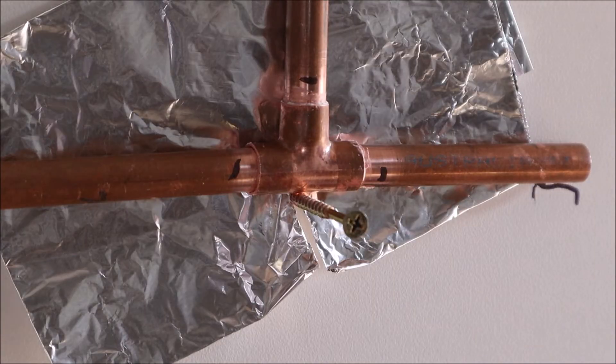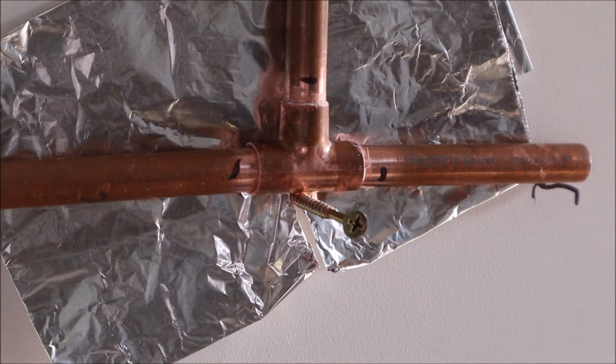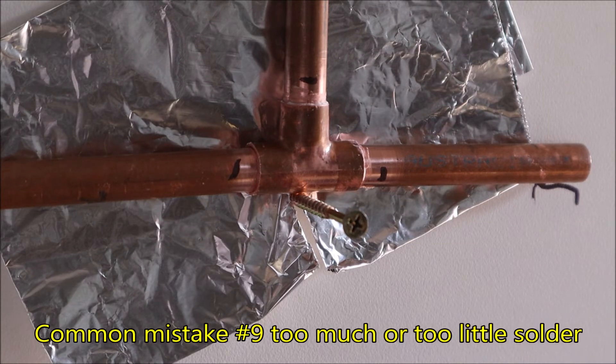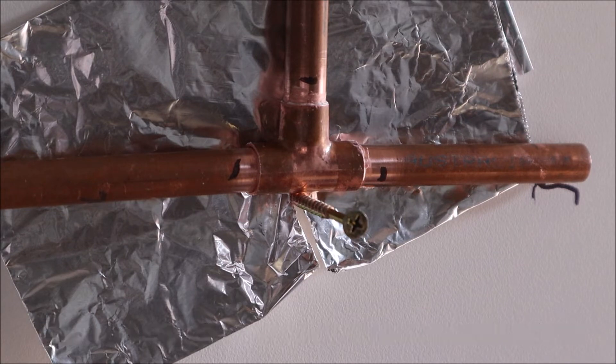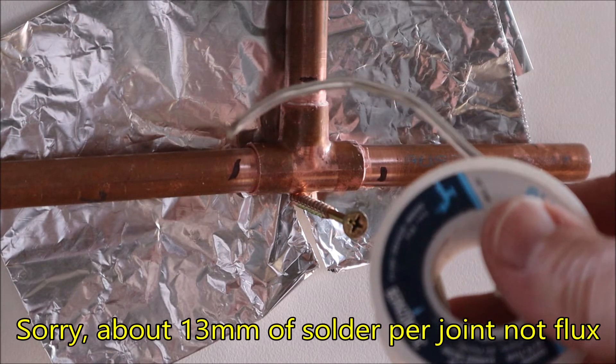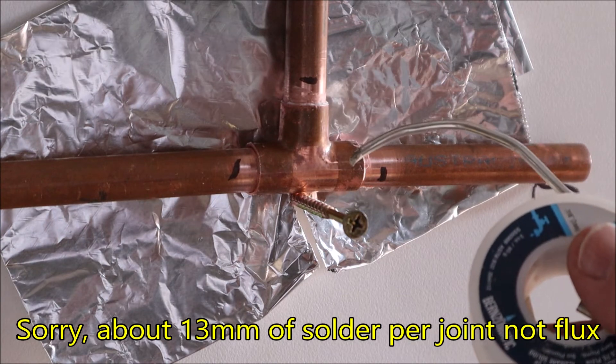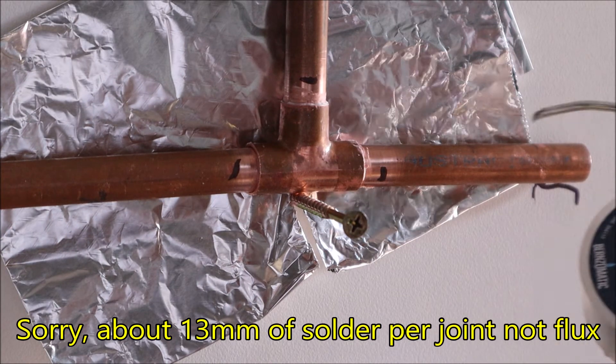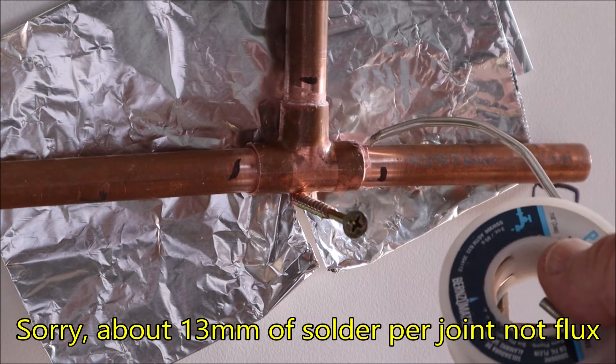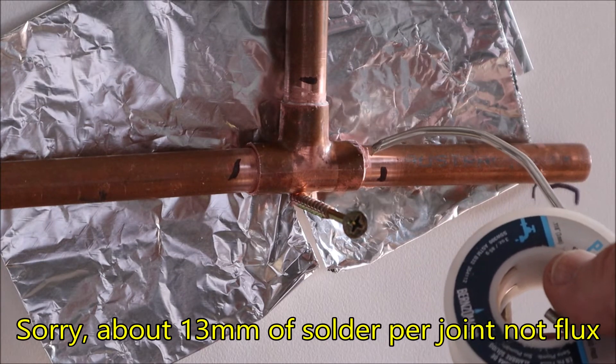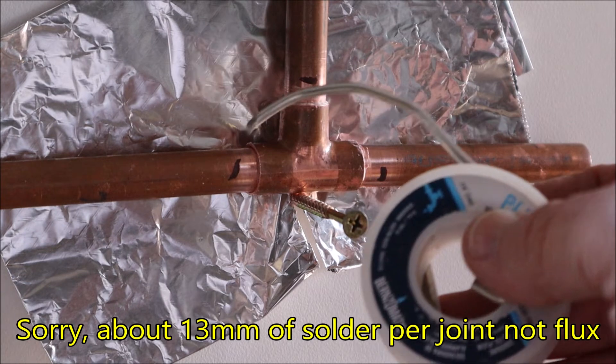Now it's not a good idea to use too much solder because, same as with the flux, it can flow into the lumen of your pipe and interfere with your water flow. A rule of thumb for the flux is that for each joint you need about the diameter of the pipe. So this is 13 millimeter pipe, so you need about 13 millimeters of flux to go into each joint, so you can estimate that as you go along.